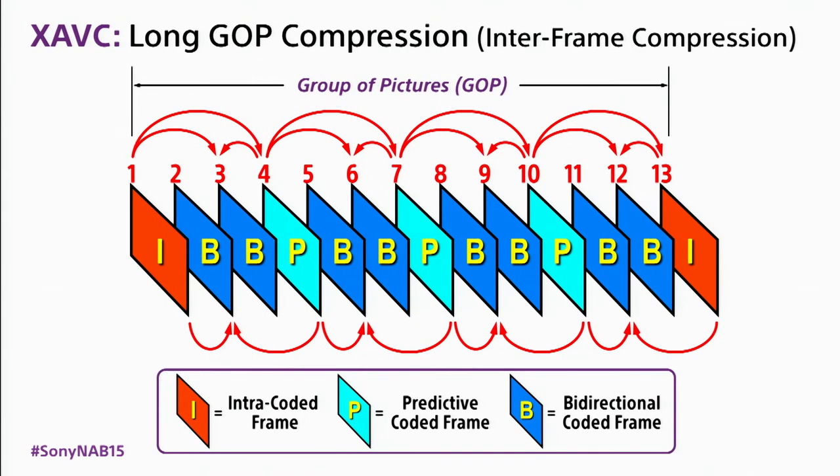When we do intra-frame compression to achieve a level of picture quality, we have to spend a lot of megabits per second. Another way to solve the problem is inter-picture compression, or inter-frame, also known as long GOP — group of pictures. This is the structure of a GOP.